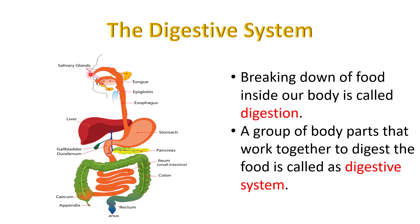Which parts of our body carry out the digestive process? Let's have a look at this image. Digestion begins from our mouth, then it goes to the esophagus which is also called the food pipe, then the stomach, then into the small intestine, then into the large intestine, then it reaches the rectum, and then the waste material comes out through the anus. The liver and pancreas also play a main role in digestion.